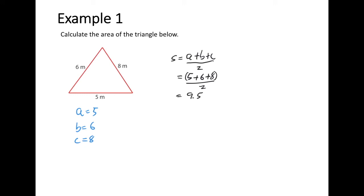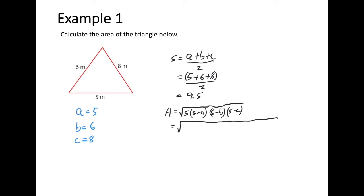Once I have the S value, I can use Heron's rule to calculate the area. First, write the formula: the square root of S times (S minus A) times (S minus B) times (S minus C). Substituting in my values, it's the square root of 9.5 multiplied by (9.5 minus 5), multiplied by (9.5 minus 6), multiplied by (9.5 minus 8).